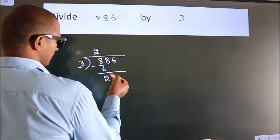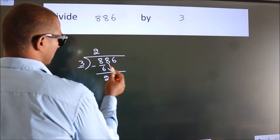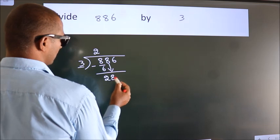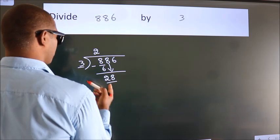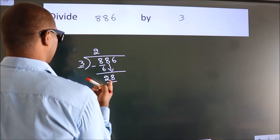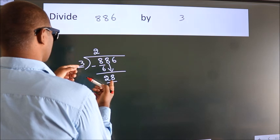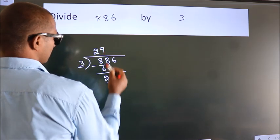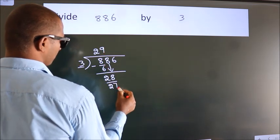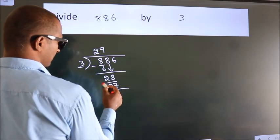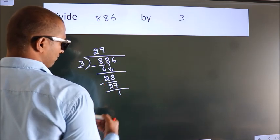After this, bring down the beside number. So 8 down. So 28. A number close to 28 in 3 table is 3 9s, 27. Now we subtract. We get 1.